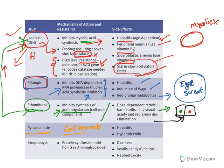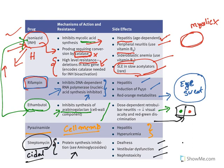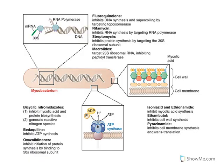Pyrazinamide inhibits the cell membrane of the tuberculosis organism. Its common side effects are hepatitis and hyperuricemia. Streptomycin, an aminoglycoside, inhibits protein synthesis and is bactericidal. It causes nephrotoxicity, neurotoxicity, and ototoxicity. Notably, streptomycin has a very low incidence of hepatitis, unlike most other anti-TB drugs.